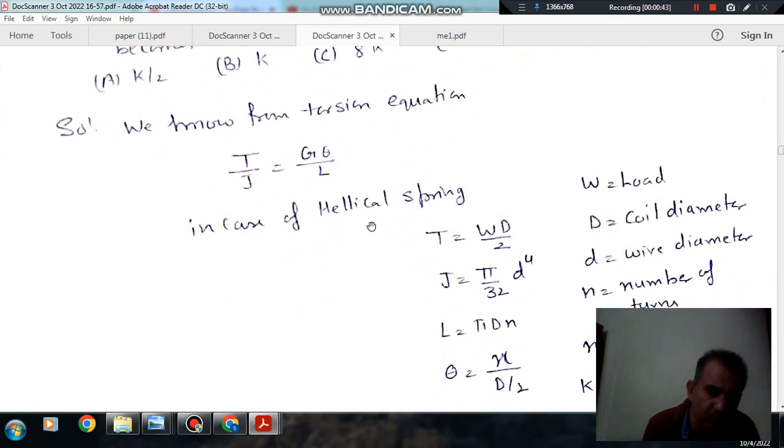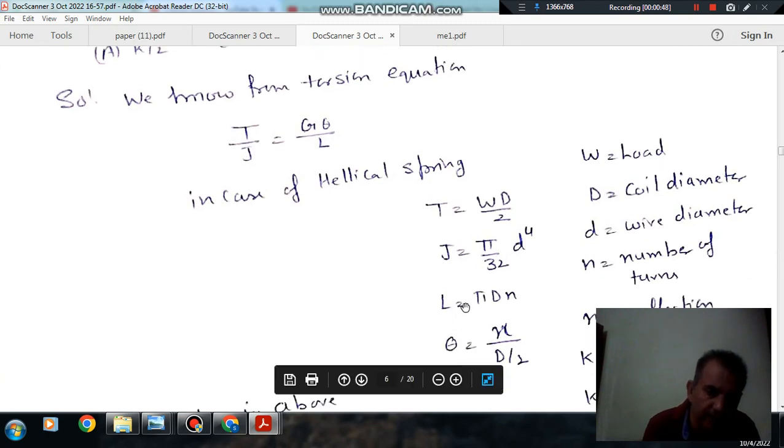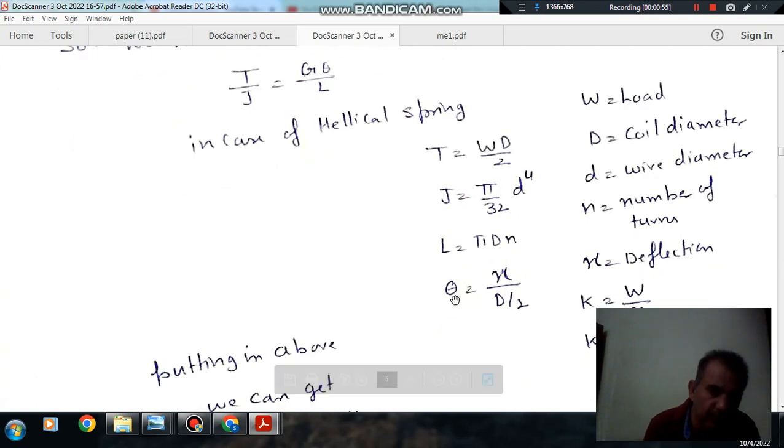And J is polar moment of inertia, and that is π/32 times d^4, where small d is your wire diameter. And length of spring is πDn, where D is your coil diameter and n is number of coils, and θ is your angle of twist.